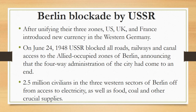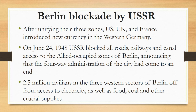Berlin Blockade by the USSR: After unifying their three zones, the US, UK and France introduced a new currency in Western Germany, which devalued the currency of Eastern Germany. Viewing this as a violation of their postwar agreements, the Soviets immediately issued their own currency into Berlin and Eastern Germany. That same day, on June 24, 1948, they blocked all roads, railways and canal accesses to the Allied-occupied zones of Berlin, and announced that the four-way administration of the city had come to an end.